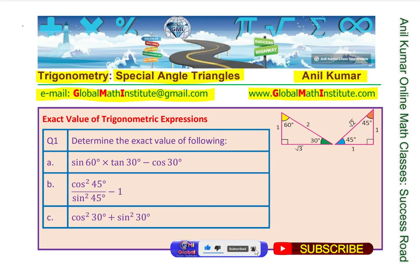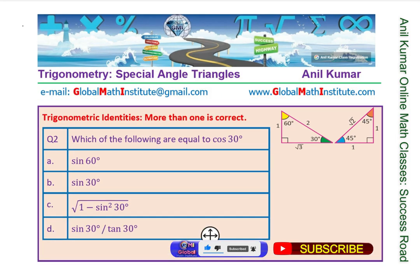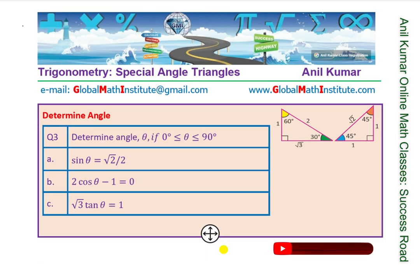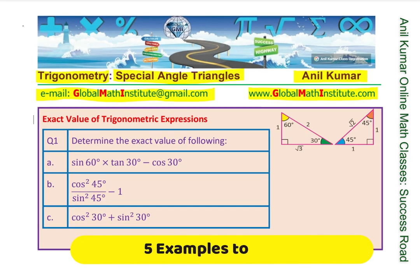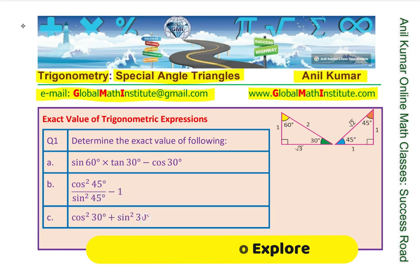You can see the questions here — question number 1, 2, 3, 4, and 5. They also include word problems and working with more than one triangle at a time, which will give you confidence and a good start. Question number 1 is: determine the exact value of the following — sin60 times tan30 minus cos30 degrees; cos squared 45 over sin squared 45 minus 1; cos squared 30 degrees plus sin squared 30 degrees.